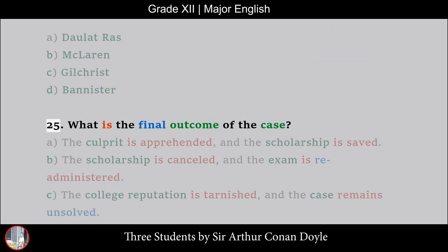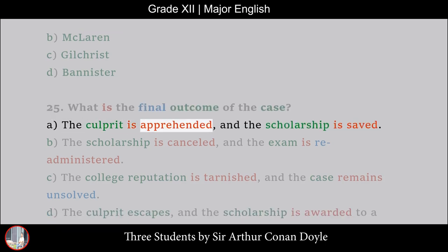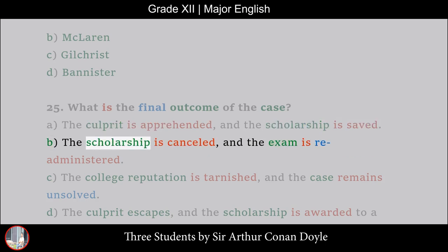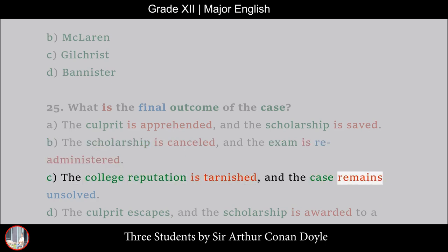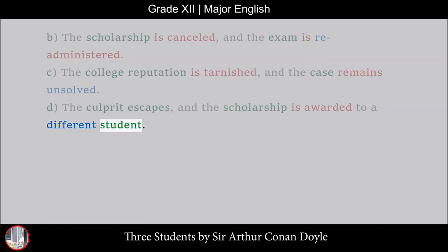25. What is the final outcome of the case? A. The culprit is apprehended and the scholarship is saved, B. The scholarship is cancelled and the exam is re-administered, C. The college reputation is tarnished and the case remains unsolved, D. The culprit escapes and the scholarship is awarded to a different student.